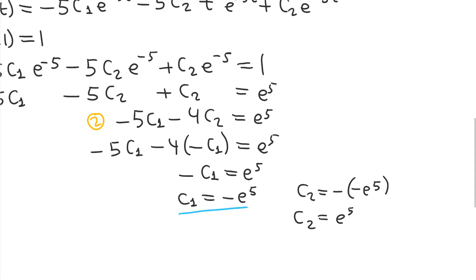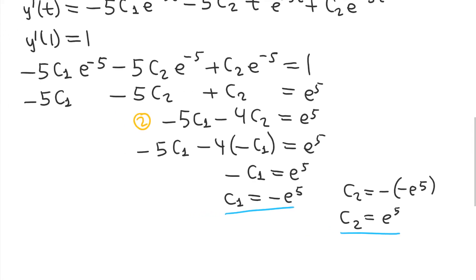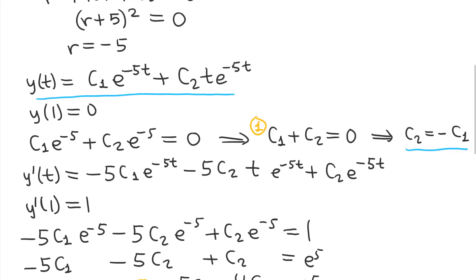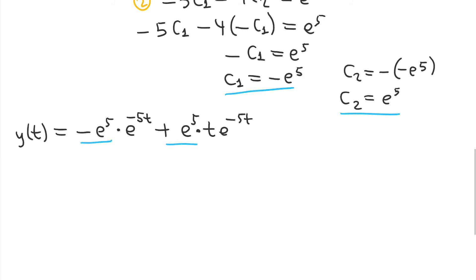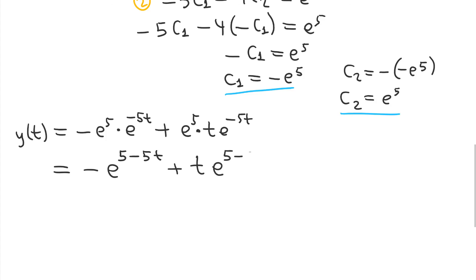Now we've solved for both coefficients. Going back to our general solution, we plug in c1 = -e^5 and c2 = e^5: y(t) = -e^5·e^(-5t) + e^5·t·e^(-5t). We can simplify by combining the exponentials — when you multiply exponentials, you add their exponents — giving us y(t) = -e^(5-5t) + t·e^(5-5t). This is our final answer.